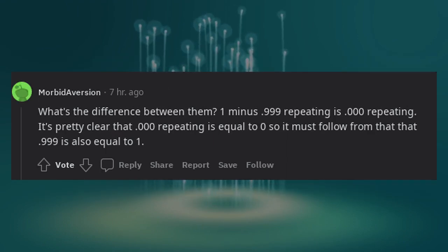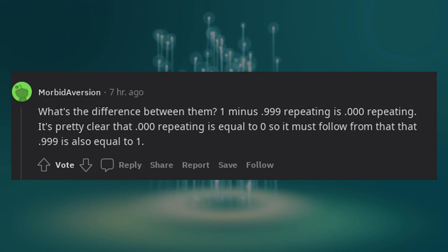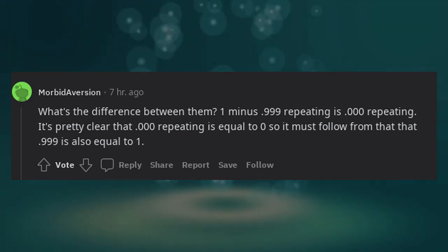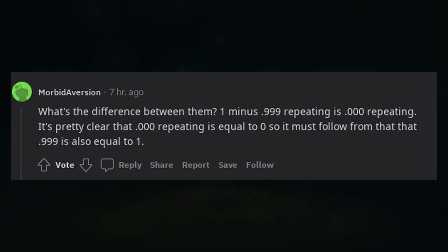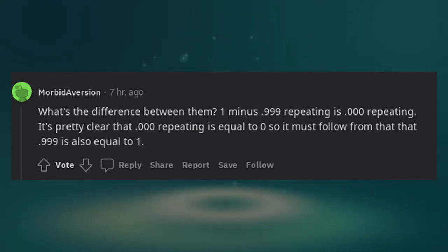What's the difference between them? 1 minus 0.999 repeating is 0.000 repeating. It's pretty clear that 0.000 repeating is equal to 0, so it must follow from that that 0.999 repeating is also equal to 1.